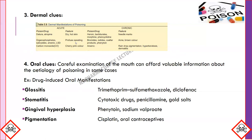Oral clues: careful examination of the mouth can provide valuable information about the etiology of poisoning. Drug-induced oral manifestations include: glossitis caused by trimethoprim-sulfamethoxazole and diclofenac; stomatitis from cytotoxic drugs, penicillamine, and gold salts; gingival hyperplasia from phenytoin and sodium valproate; and pigmentation from cytokines and oral contraceptives.